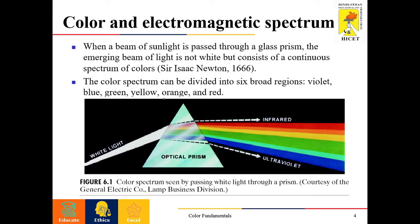In 1666, Sir Isaac Newton found that when a beam of sunlight is passed through a glass prism, the emerging beam of light is not white but it consists of different spectrums of colors.